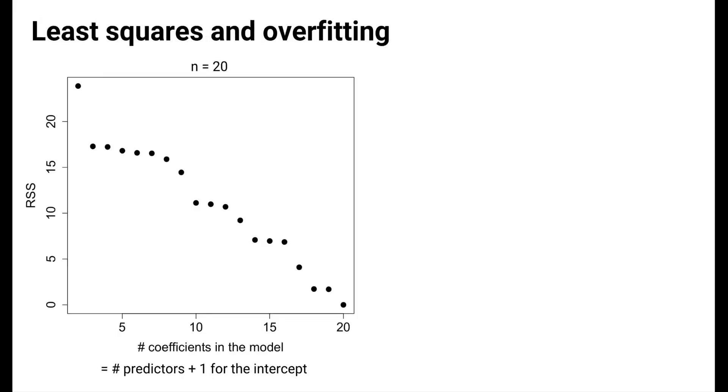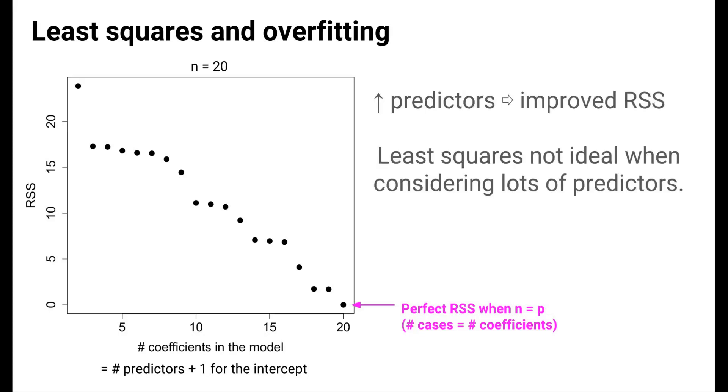A problem that can arise with the least squares approach is the potential for overfitting when the number of predictors increases. In the plot here, we had a dataset with 20 observations, where all the predictors were simulated to be just random numbers. We increase the number of predictors included in the model one by one, and we see that as the number of predictors increase, going along the x-axis, the sum of squared residuals on the y-axis is always decreasing. In particular, when the number of coefficients is equal to the number of cases, we achieve the perfect RSS of zero. In general, this is a problem for the least squares approach. Including more predictors automatically improves the sum of squared residuals metric.